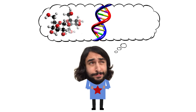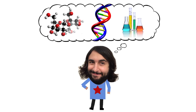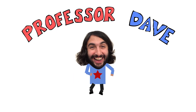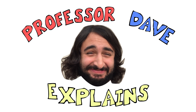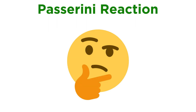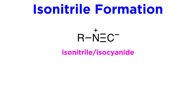Professor Dave Explains. Next up in our survey of name reactions is the Passerini reaction. To delve into this reaction we first have to introduce an interesting new class of reactive compounds, the isonitriles, also known as isocyanides.